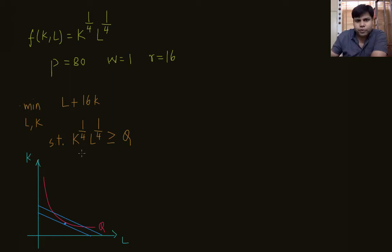What is the slope of the isoquant? The slope of the isoquant is the ratio of the marginal products of labor and capital, which we can easily obtain by taking the partial derivative of the production function with respect to l and k.